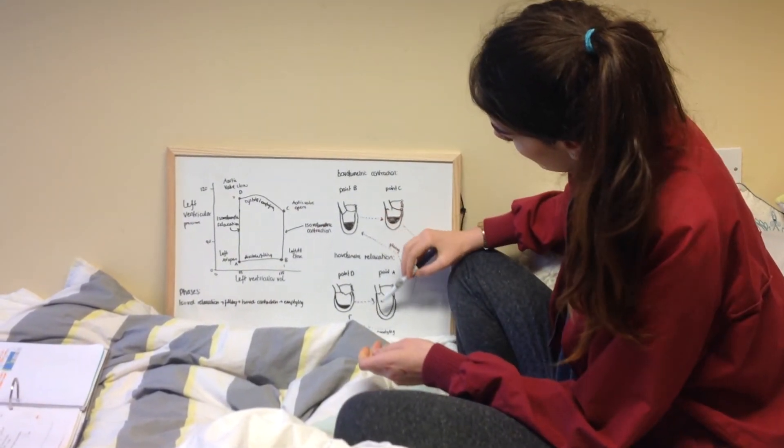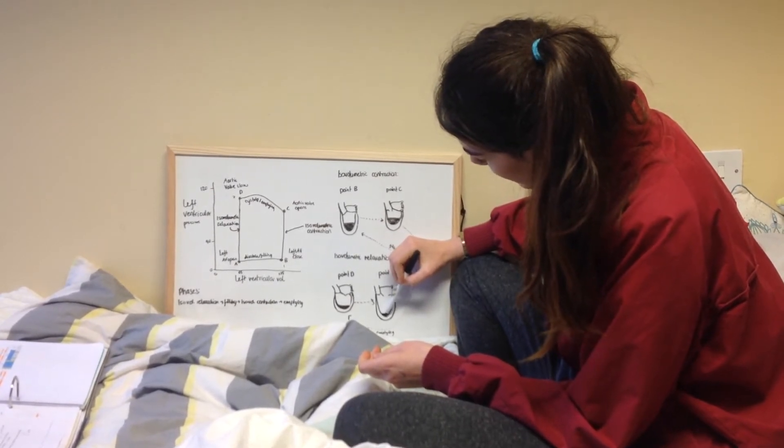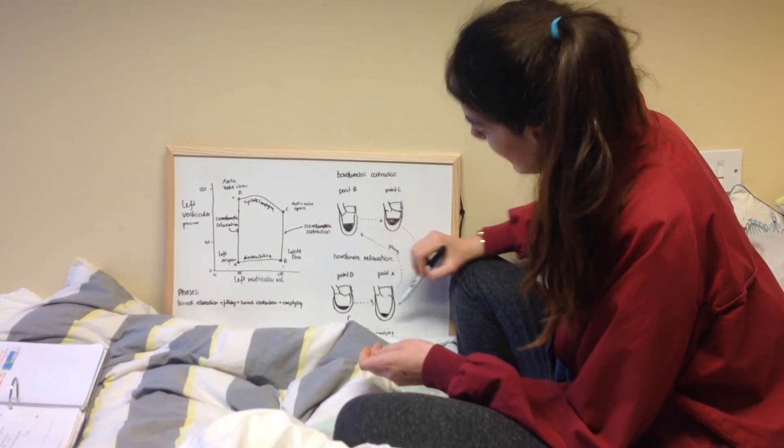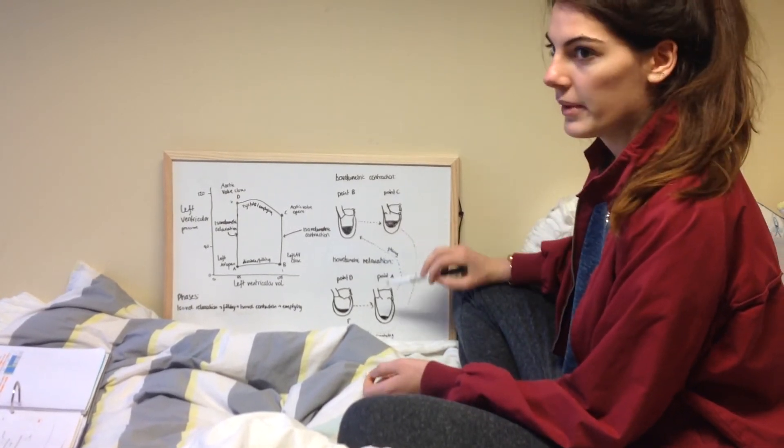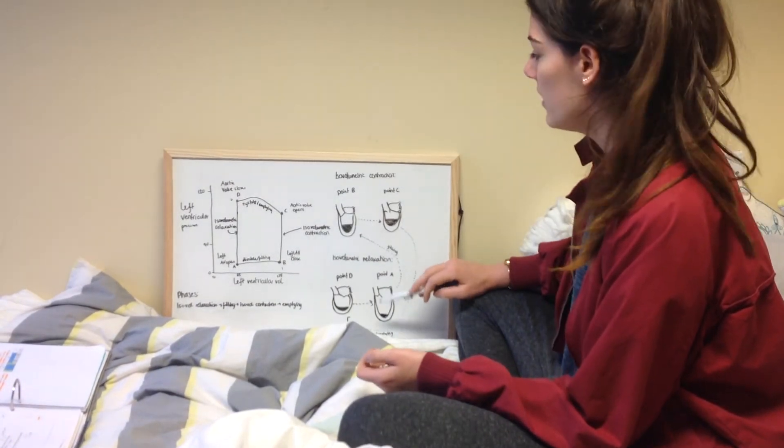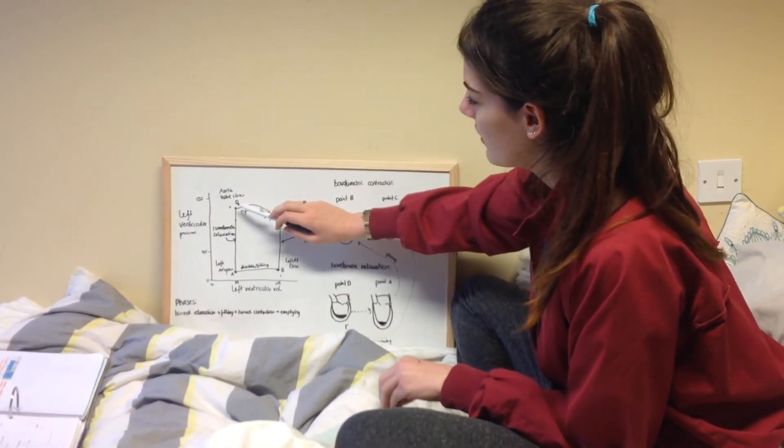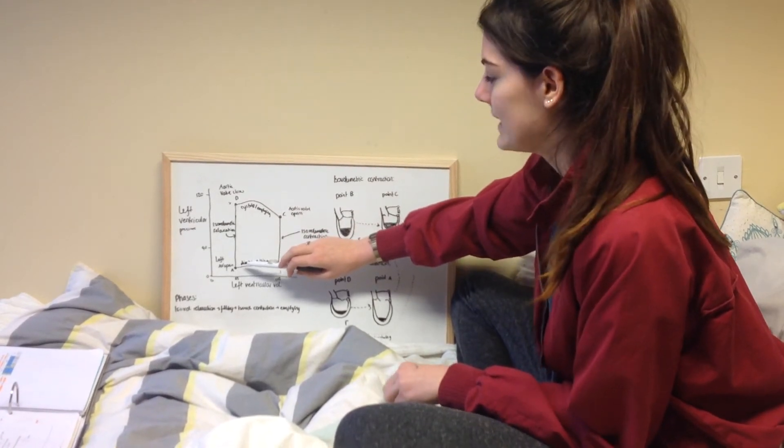Here, the volume will stay the same because it's isovolumetric relaxation, but the pressure will drop because the ventricle gets out of its contracted state. The pressure greatly drops, but the volume stays exactly the same.